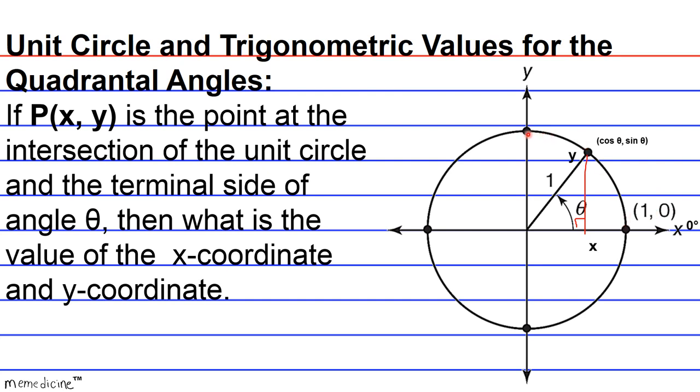Let's go to the next quadrantal angle, 90 degrees. Since the unit circle has a radius of one, this means that it intersects the y-axis at one. Therefore, for 90 degrees, the cosine of theta is going to be zero, and the sine of 90 degrees is going to be one.